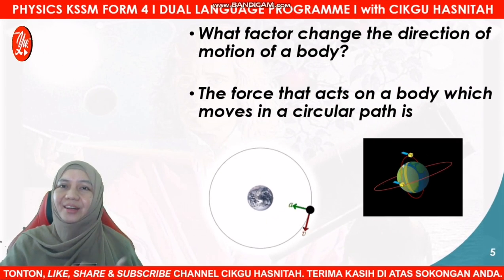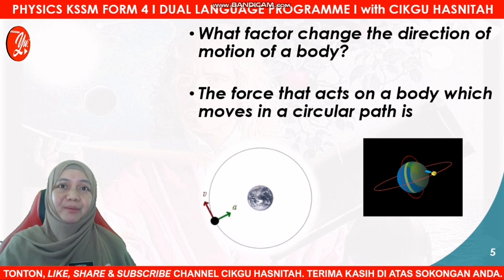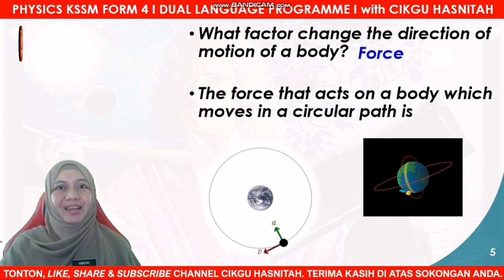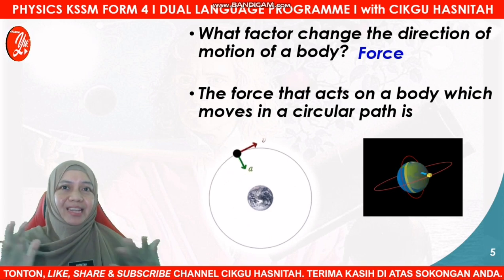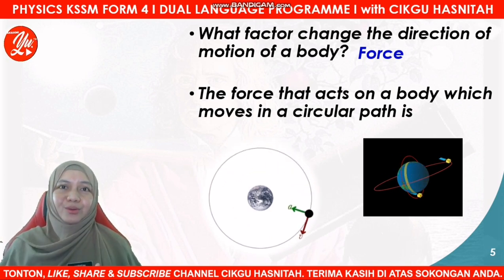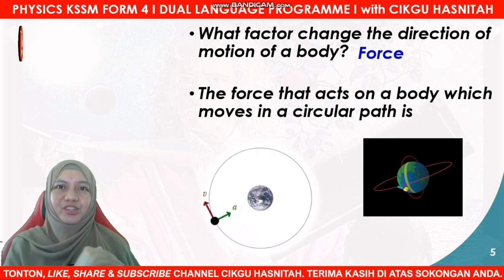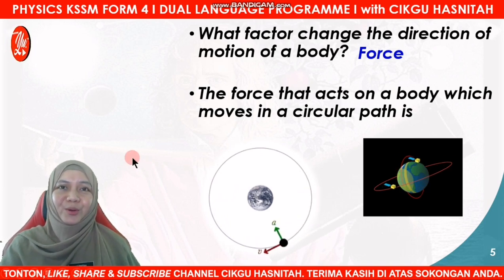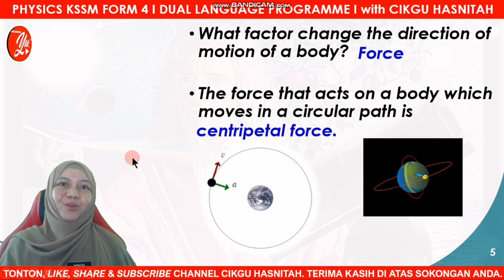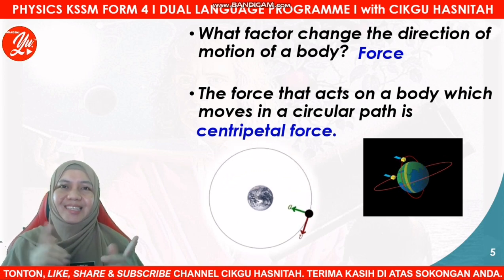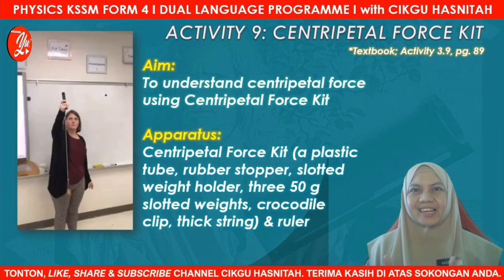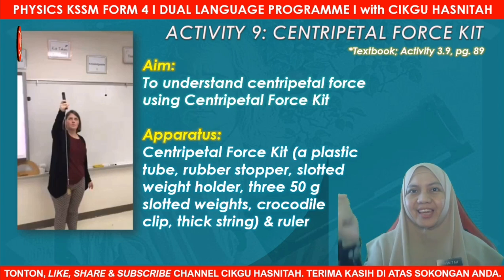So what are the factors that affect the changes in direction of motion of a body? It is a force. Remember, we learned in chapter 2 that force can change the shape and size of a body, and force is also able to change the direction of motion. The force that acts on a body which moves in a circular path is known as centripetal force. A body moving in a circular motion always experiences centripetal force acting on it.